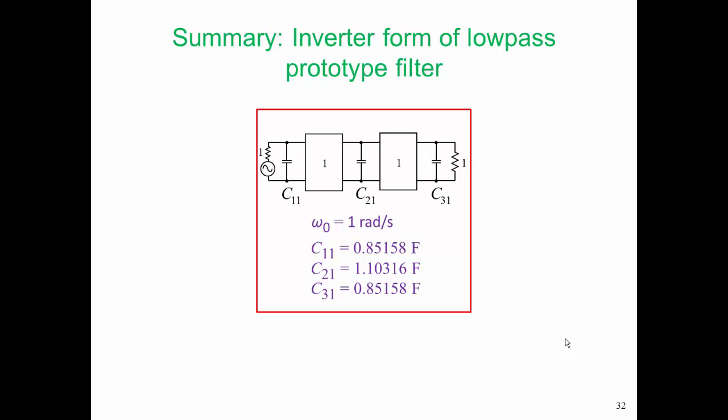In summary, this is the inverter form of the low-pass prototype filter. Everything is starting to fall into place here. We know those capacitors are going to be converted to shorted stubs. We know those inverters are going to be somehow realized by lengths of transmission line.